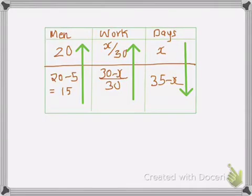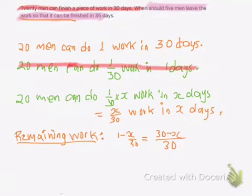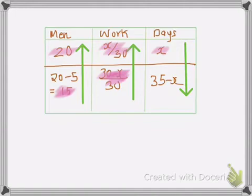Here I have represented the same information in table form. Here at first 20 men can do x/30 work in x days, and the remaining 15 men, as 5 men left work, the remaining 15 men should do the remaining work which is (30-x)/30 we got from here, in 35 minus x days. I hope you got the concept here where the remaining days is 35.